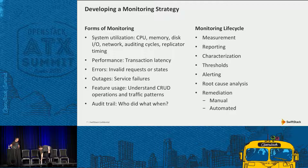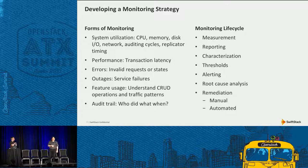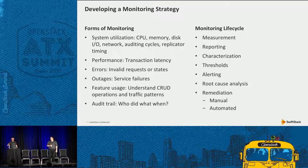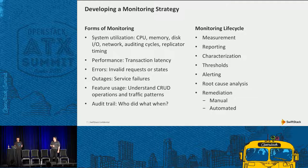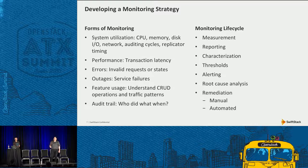So developing a monitoring strategy. We can't pick a monitoring solution if we don't know what we're trying to do. Really two major things: what we want to monitor and why. System utilization is the basic one — gathering CPU, memory, and network I/O — but that can also include service-specific metrics like auditing cycles, replicator timing, and consistency metrics around Swift. Then there's monitoring for performance: not necessarily an error, but are things starting to slow down?